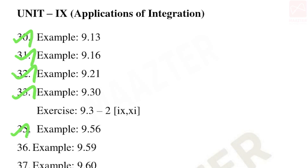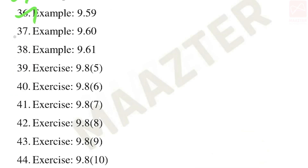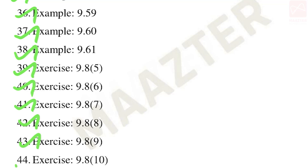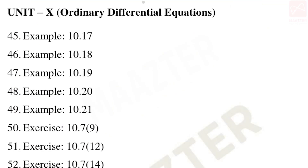More Unit 9 five-mark: examples 9.56, 9.59, 9.60, 9.61. Exercise 9.8 — fifth, sixth, seventh, eighth, ninth, and tenth sums.